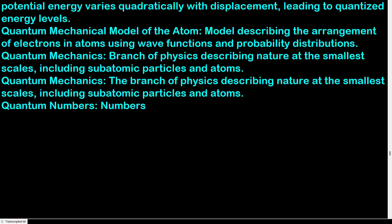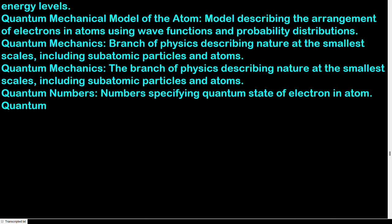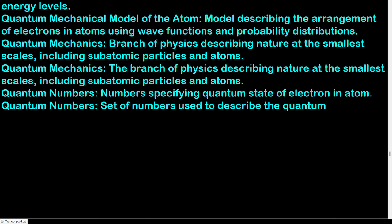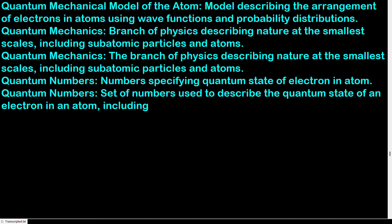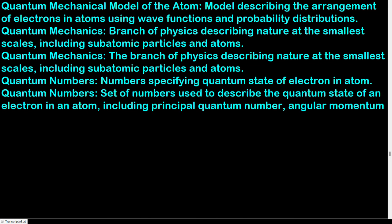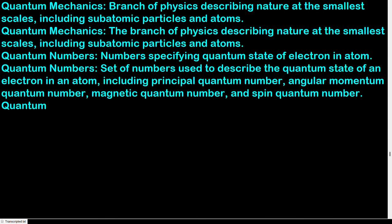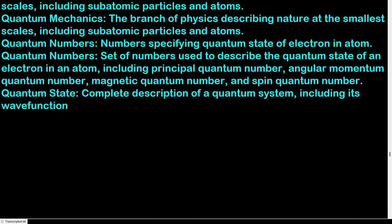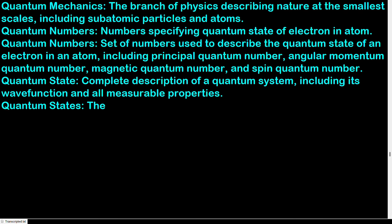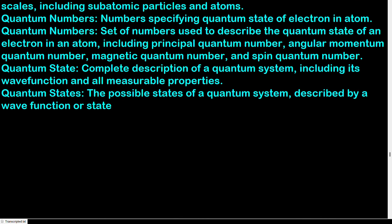Quantum numbers: set of numbers used to describe the quantum state of an electron in an atom, including principal quantum number, angular momentum quantum number, magnetic quantum number, and spin quantum number. Quantum state: complete description of a quantum system, including its wave function and all measurable properties, described by a wave function or state vector.